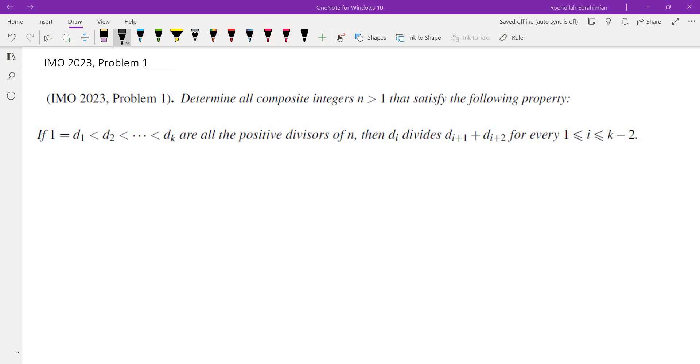Determine all composite integers n greater than 1 that satisfy the following property: If d₁ through dₖ are all positive divisors of n, then dᵢ divides dᵢ₊₁ plus dᵢ₊₂ for every i between 1 and k minus 2.